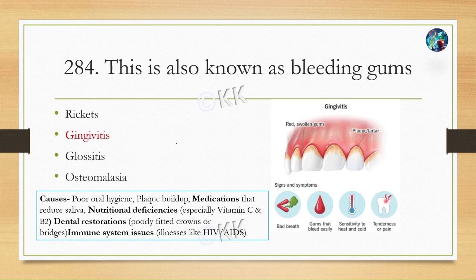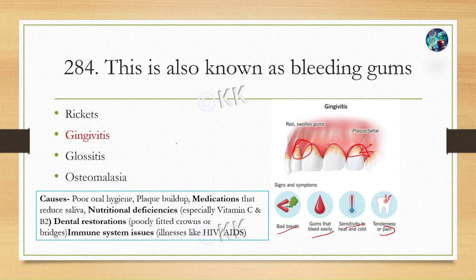Gingivitis is characterized by red, swollen gums with bleeding and tenderness. The causes of this condition include poor oral hygiene, plaque buildup, nutritional deficiency such as vitamin C and vitamin B2 deficiency, dental restoration issues, or immune system issues like HIV/AIDS.